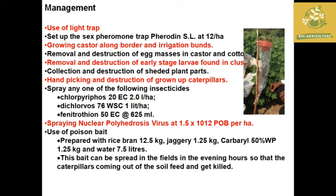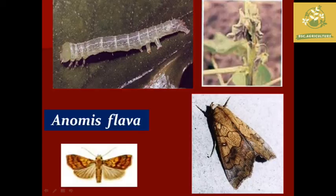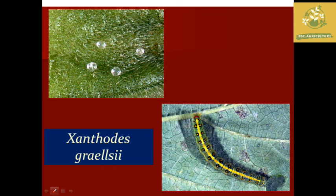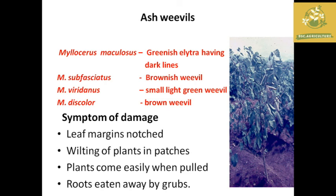The next defoliators covered are semilopers under family Noctuidae, order Lepidoptera. Pictures of Anomis flava larva and Xanthodes graellsii are shown. The next pest is the ash weevil, with scientific names Myllocerus maculosus and other species including subfasciatus, venustus and discolor. The major symptom is leaf margin notching, wilting of plants, and patches; the plant can be pulled out easily as the grubs eat away the roots.